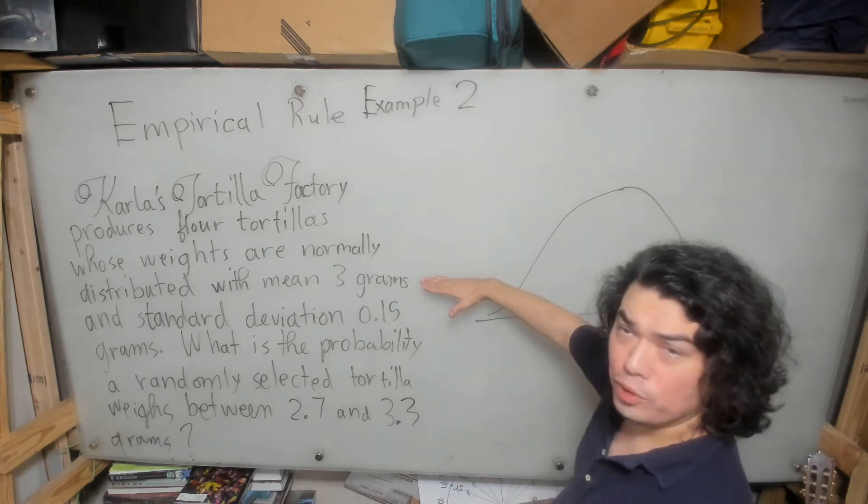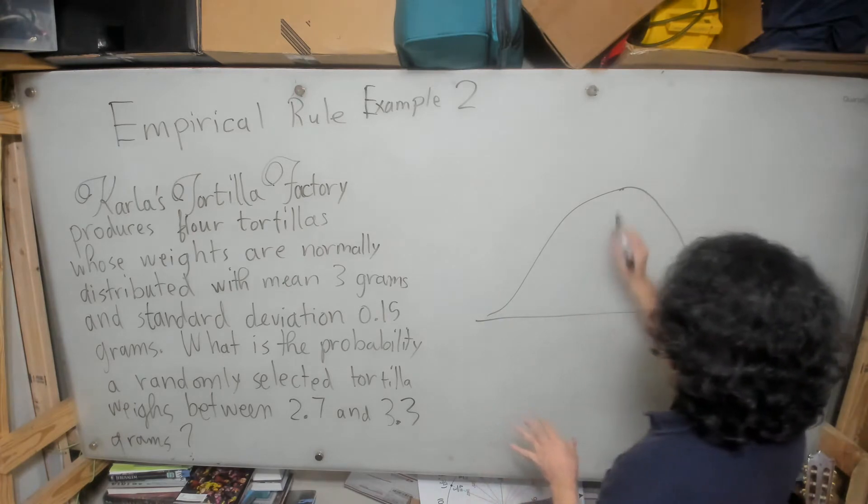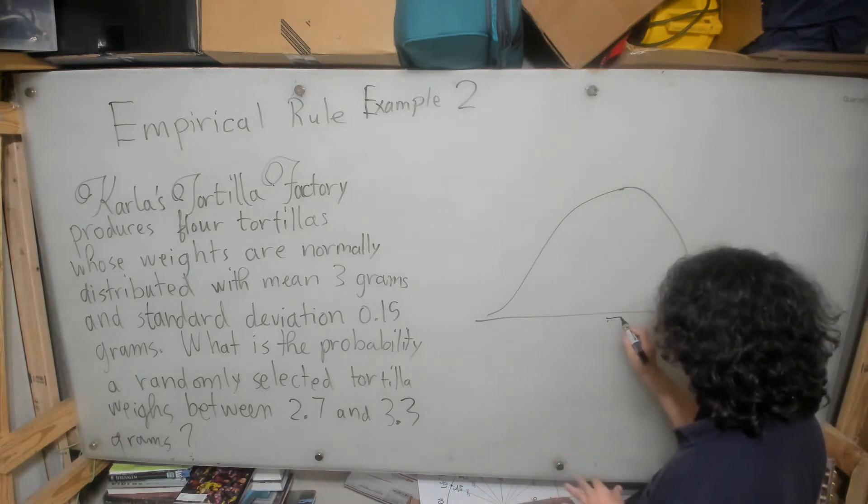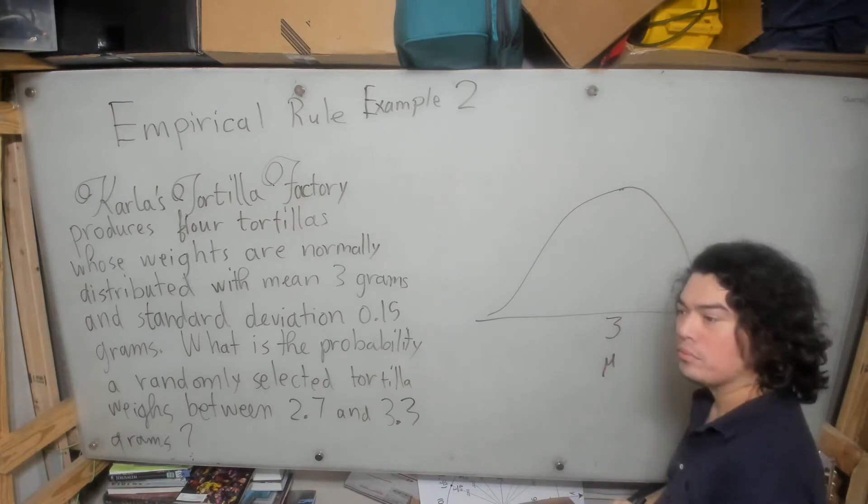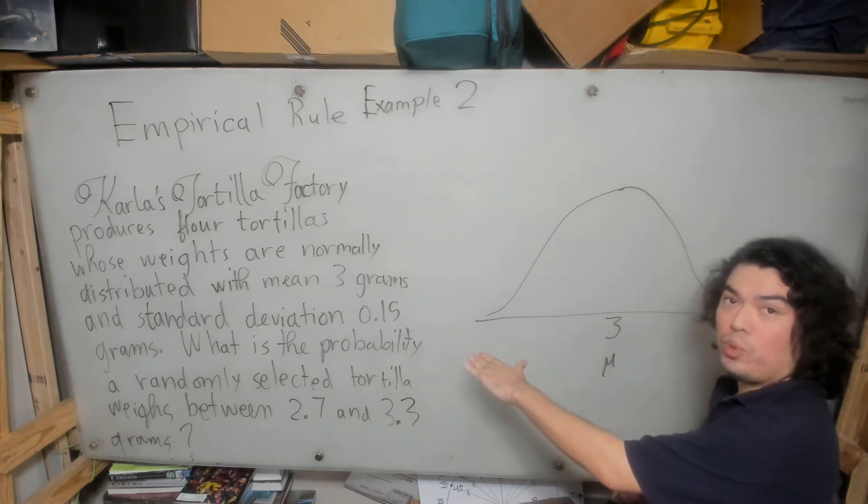Again, it's normally distributed with a mean of 3 grams. And again, the mean goes right in the middle. So 3 grams, that's our mean. Standard deviation 0.15.